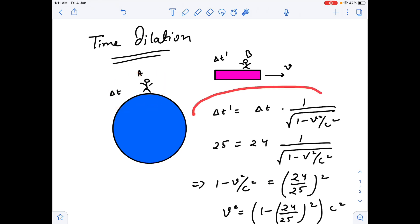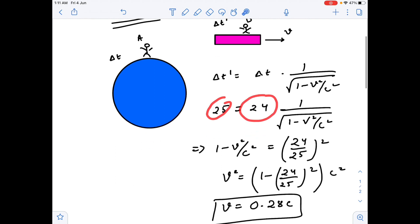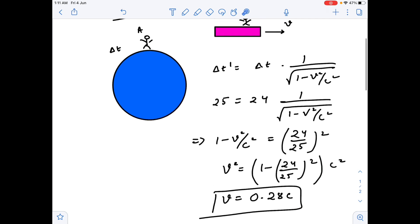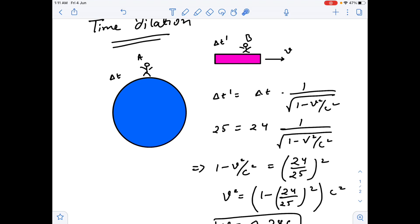So this must be 25 and this should be 24. After doing some quick calculation we get v equals 0.28c. So the person, I mean the student, should travel with the speed of about near about 30 percent of the speed of light.